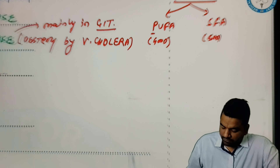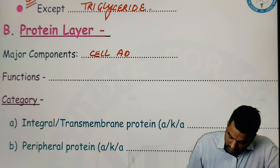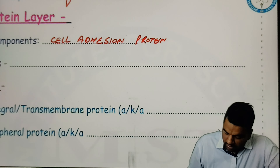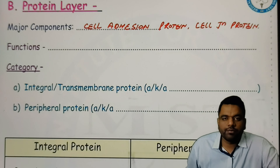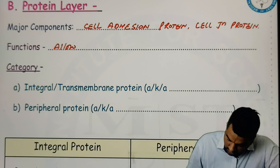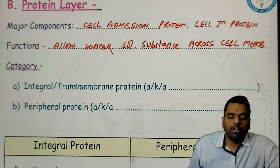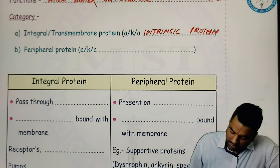Now talking about the protein layer — the major components of the protein layer are number one: cell adhesion protein, and another one is cell junction protein. The function of the protein layer is to allow water-soluble substances across the cell membrane. Two categories are there: integral or transmembrane protein, which is also known as intrinsic protein, and peripheral protein, also known as extrinsic protein.